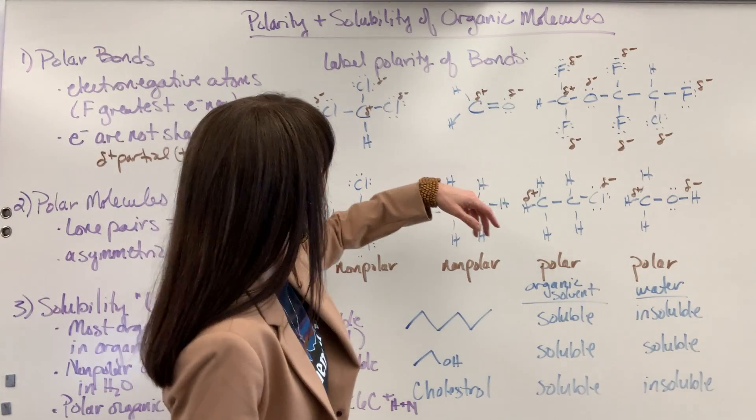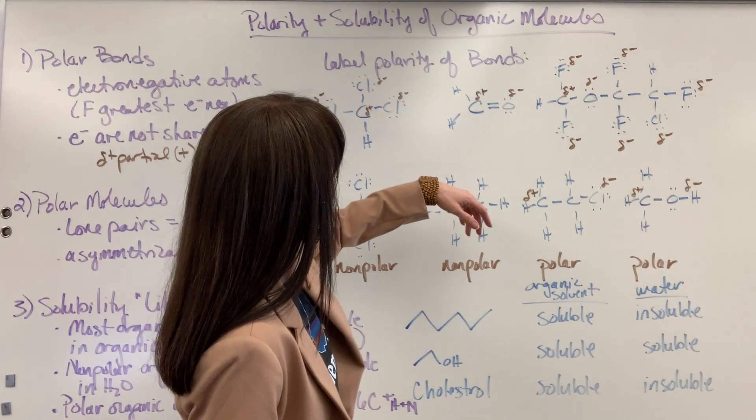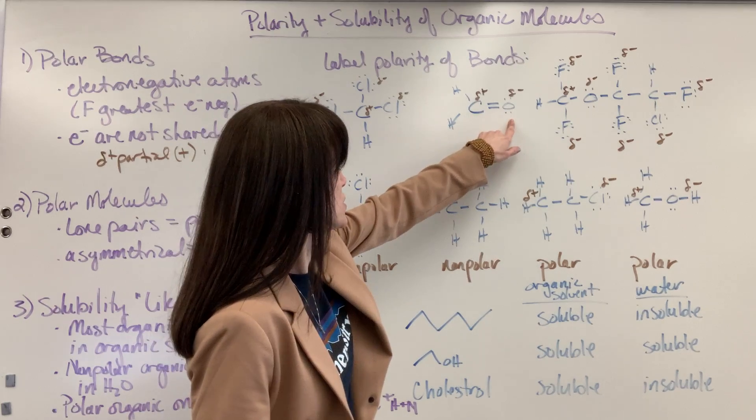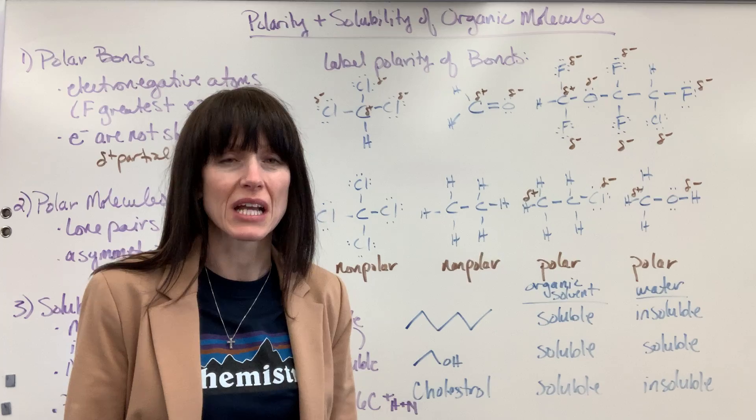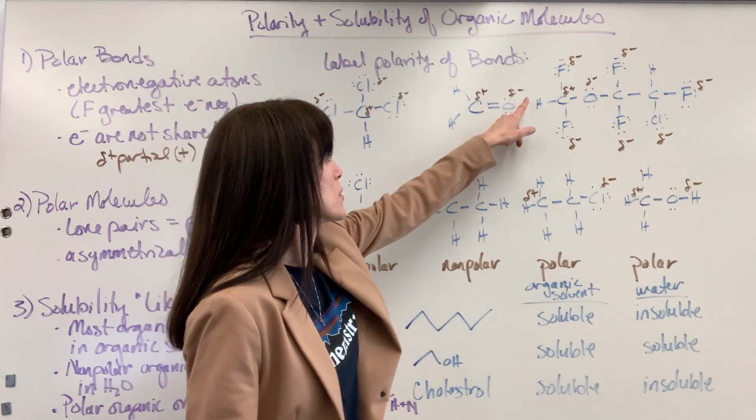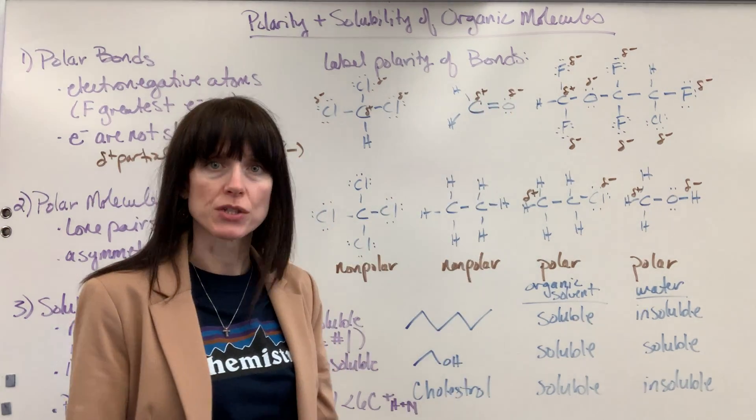Now here we have an example of oxygen with the carbon. Of course oxygen is going to be much more electronegative than the carbon. So it's going to be your partial negative and the carbon will be the partial positive.